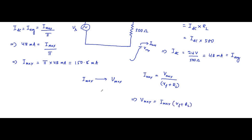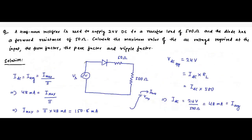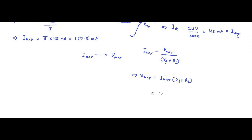Substituting the values: Imax is 150.8 milliampere, RF is 50 ohm, and RL is 500 ohm. Always convert milliampere to ampere. So Vmax equals 150.8 × 10⁻³ multiplied by 550 ohms, which gives 150.8 into 550 divided by 1000. This comes out to approximately 82.94 volts. This is the maximum value of the input voltage that was asked in the question.